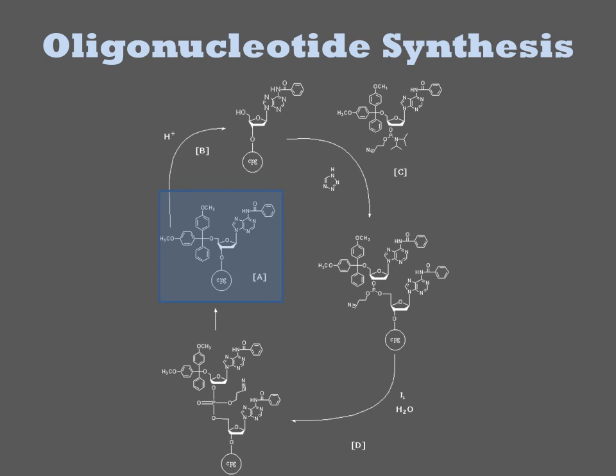These bases initiate the formation of the oligonucleotide through cycles of reactions. In the de-blocking step, the column is treated with a strong acid to remove the trityl group. The column is then washed with the next phosphoramidite that will be joined to the growing chain, along with a catalyst.